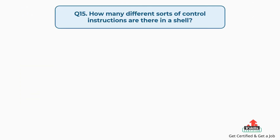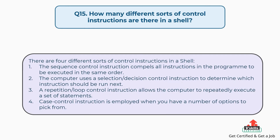Question number fifteen: how many different sorts of control instructions are there in a shell? There are four: first, sequence control instruction — compels all instructions to be executed in the same order; second, selection or decision control instruction — determines which instruction should be run next; third, repetition or loop control instruction — allows the computer to repeatedly execute a set of statements; fourth, case control instruction — employed when you have a number of options to pick from.